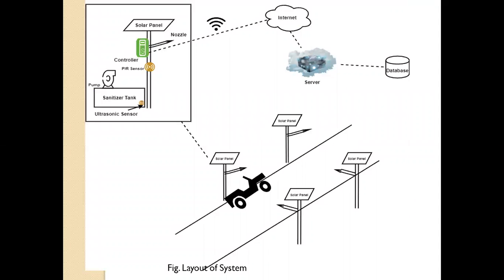This is the solar based system. The system consists of street pole, on that street pole there is one solar panel, then there is nozzle controller, PIR sensor, sanitizer tank with capacity of 2000 liter, ultrasonic sensors and pump.